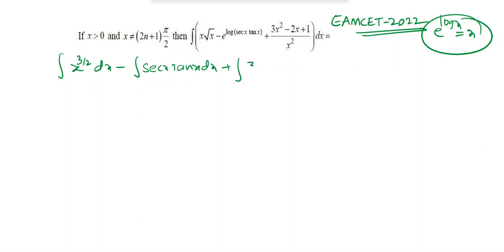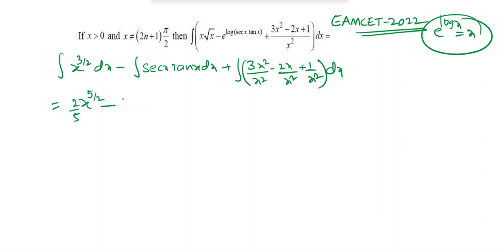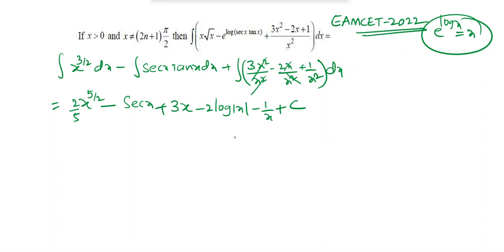Plus integration of (3x² minus 2x) by x² plus 1/x² dx. Integrating x^(3/2) gives x^(5/2) times 2/5. The integral of secx·tanx is secx. Remaining terms: x² cancels giving integration of 3 dx = 3x; integration of minus2/x = minus 2·log|x|; integration of 1/x² = minus1/x. Plus constant c.